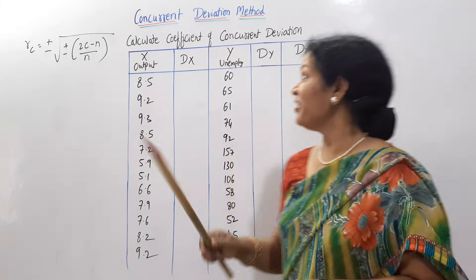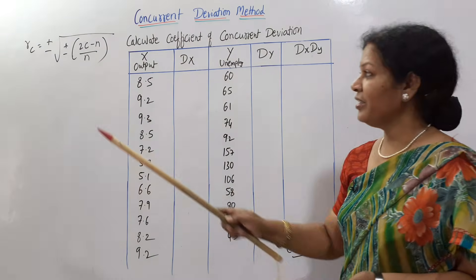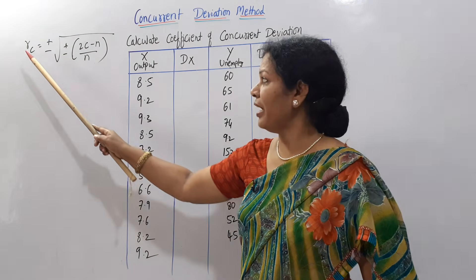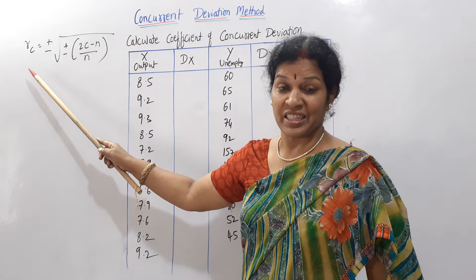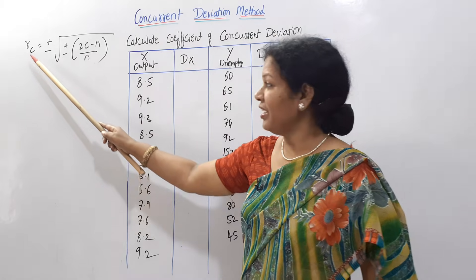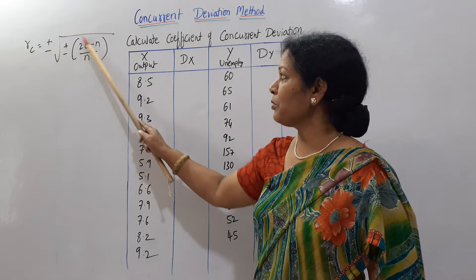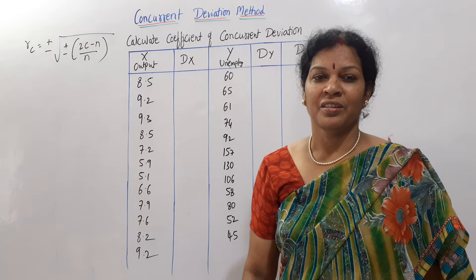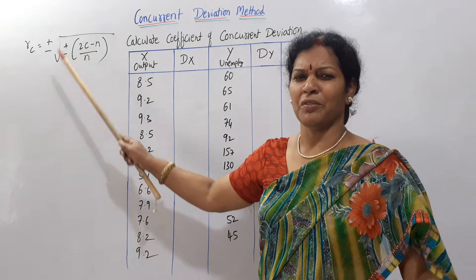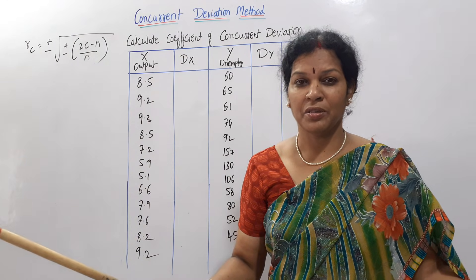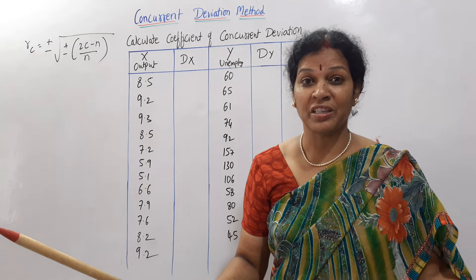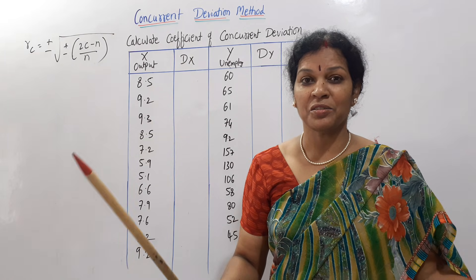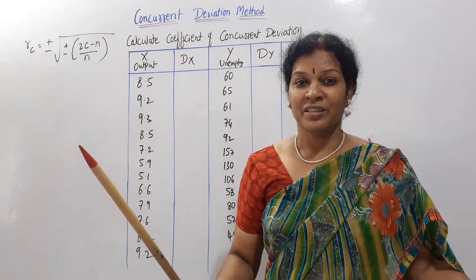Let's see the formula first. In the Concurrent Deviation Method — this is a type of rank correlation — RC (concurrent deviation coefficient) is equal to plus or minus root of plus or minus into (2C minus n) by n. What you need to remember is: 2C minus n, divided by n. That's the simple formula.